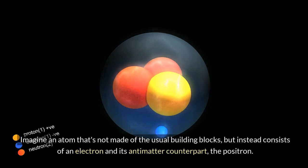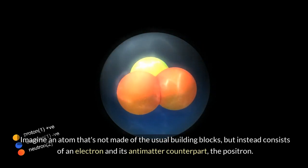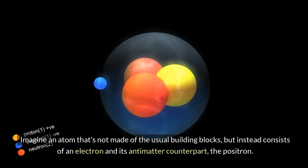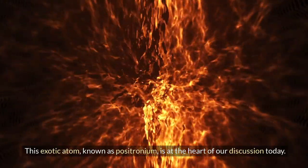Imagine an atom that's not made of the usual building blocks, but instead consists of an electron and its antimatter counterpart, the positron. This exotic atom, known as positronium, is at the heart of our discussion today.